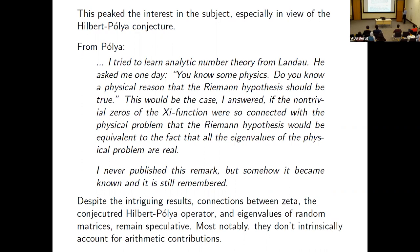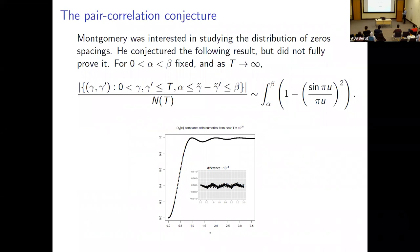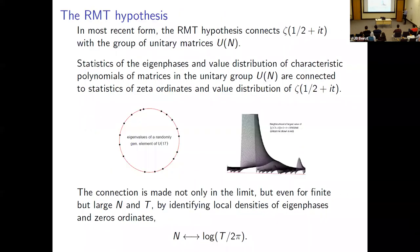Many interesting results have since supported the connection between zeta and random matrices, but things remain speculative: not much has been proven rigorously. Also, random matrix theory does not know about arithmetic — it doesn't know about the primes. It captures the local statistics of zeros, but going far out you see large dips in the pair correlation not captured by random matrices — caused by the primes. The long-range behavior is affected by the primes; random matrices are limited to that extent.